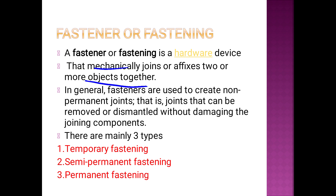Two or more objects are mechanically joined. Fasteners are used to create non-permanent joints — that is, joints that can be removed or dismantled without damaging the joining components. We will assemble the moving parts using fasteners and fix them.